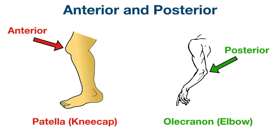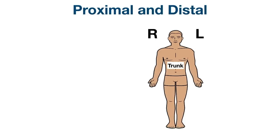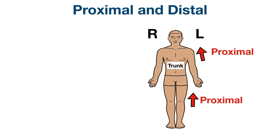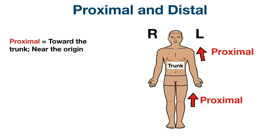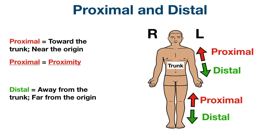The next pair of directional terms is proximal and distal. These terms are most commonly used on the extremities and tubular structures. If we move toward the trunk or point of attachment, then we're moving proximal. Proximal is defined as toward the trunk or near the point of attachment or origin — think of the word proximity, which means near or close. If we move away from the trunk or point of attachment, then we're moving distal. Distal is defined as away from the trunk or far from the point of attachment — think of the word distant, which means far away from.